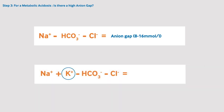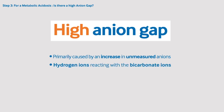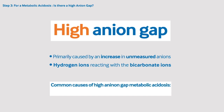Sometimes potassium is included in the equation as another cation, and so the normal range is increased to 12 to 20 millimoles per litre. A high anion gap is primarily caused by an increase in unmeasured anions, caused by hydrogen ions reacting with the bicarbonate ions. The most common causes of a high anion gap metabolic acidosis are lactic acidosis, ketoacidosis, toxins, and renal failure.